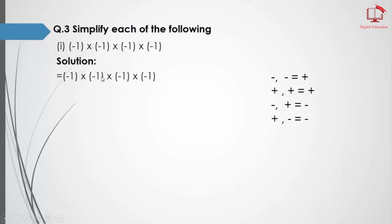First we will multiply the first two digits, then multiply the next two digits. Here 1 times 1 equals 1, and minus times minus equals plus. Same for the next pair: minus times minus equals plus and 1 times 1 equals 1. Then again 1 times 1 and plus times plus equals plus.